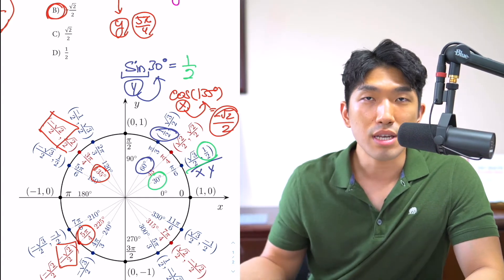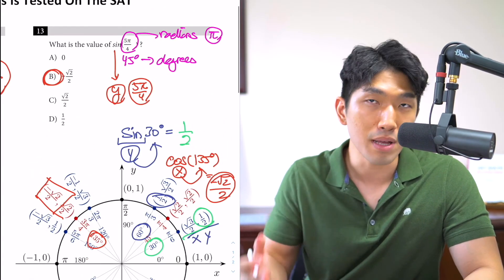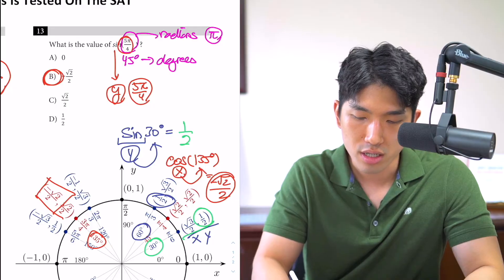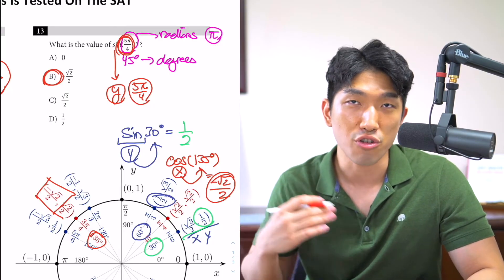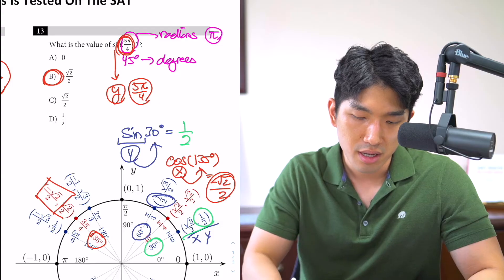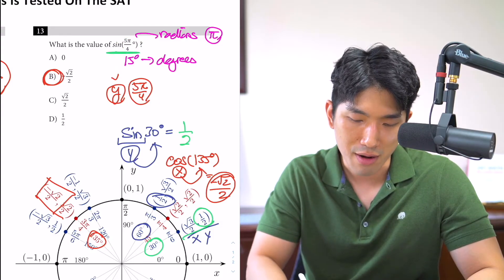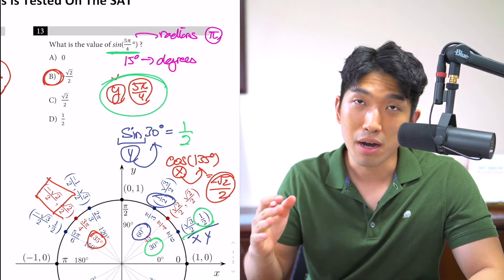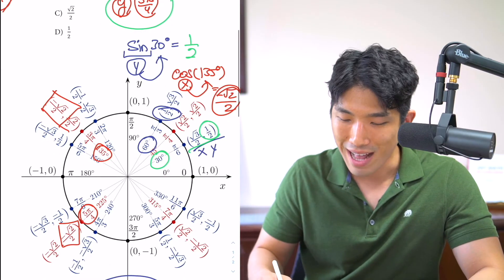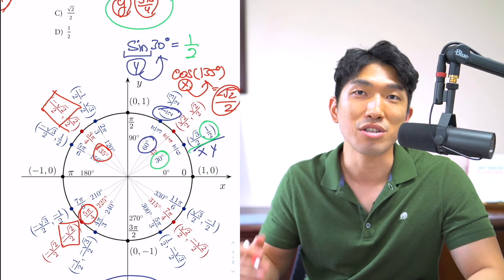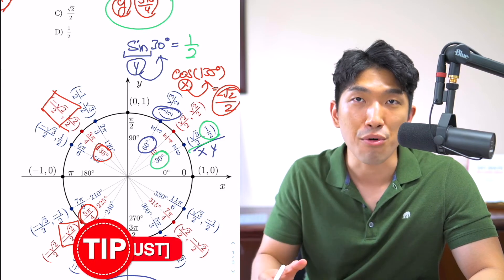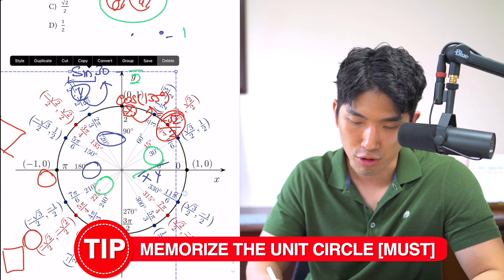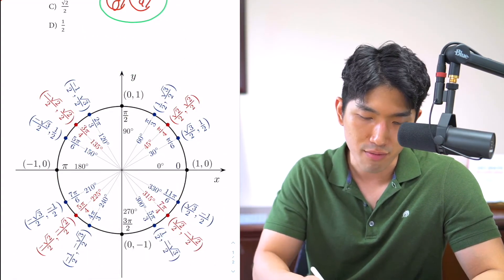Unit circle questions are essentially testing your ability to identify or recall the X or Y coordinate for a given angle. That's why these questions are either you know it or you don't. If you can read sine of 5π over 4 and recognize you're looking for the Y value at 5π over 4, you'll get the answer. But the College Board will not give you the unit circle on the SAT, which means they are essentially asking you to memorize the unit circle chart. If you want to get more questions right and a high score on the SAT, you're just going to have to memorize it.